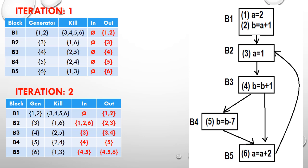We will keep finding these values until we have a settlement. This means if in the i-th iteration we see certain input and output values for different blocks, and in the (i+1)-th iteration the input and output values are the same with no change, then we stop our operation. As long as they keep changing, we perform the next iteration.